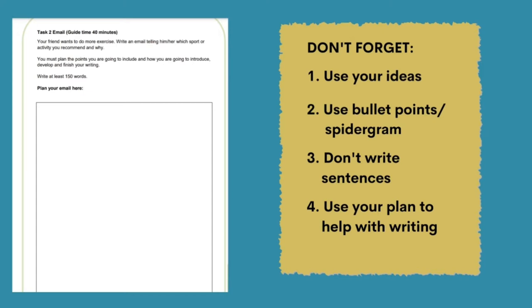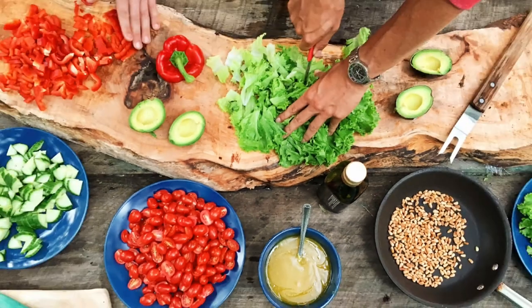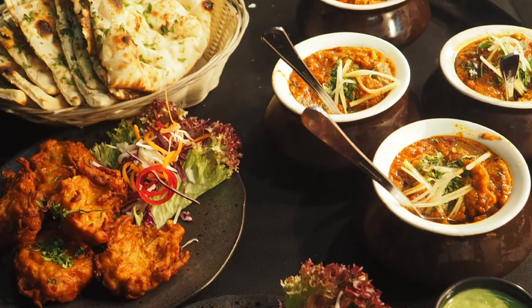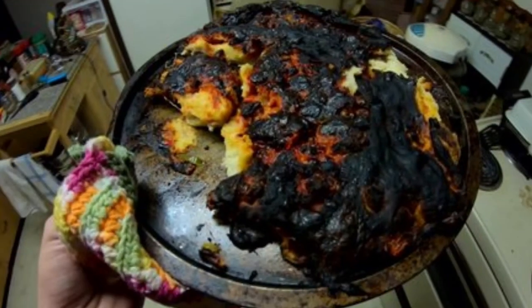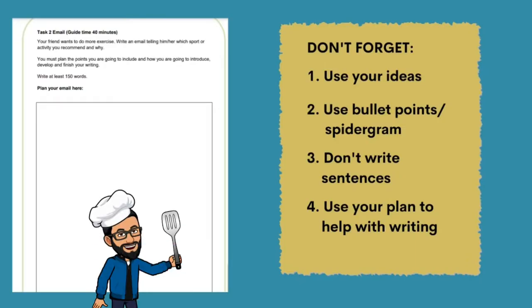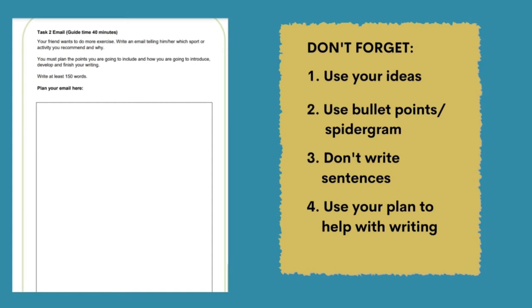Think about it like this: you need to cook a dish, and for that dish you need all the right ingredients. If you cook with all the right ingredients, the end product should look great. But if you choose all the wrong ingredients, the end product might look terrible — or it might just be that you're a horrible cook. Whatever the case, you need to choose the right plan to help you with the writing.